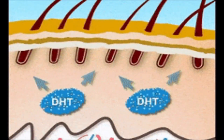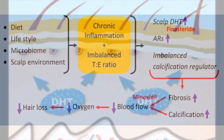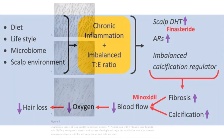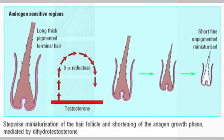The genetic changes brought by the DHT-receptor complex interaction with DNA can shorten the anagen, or growth phase, of the hair follicle and lengthen the telogen, or resting phase. Over time, this results in a miniaturization process of the hair follicle, which produces progressively thinner and shorter hairs.